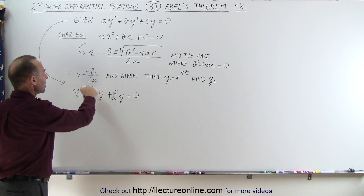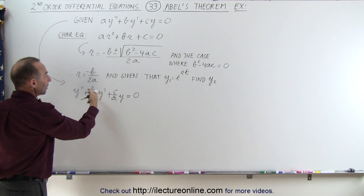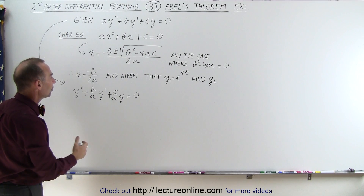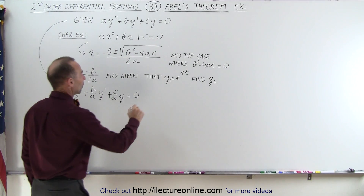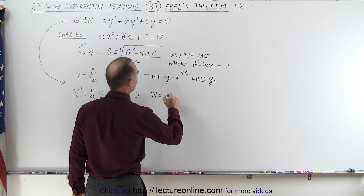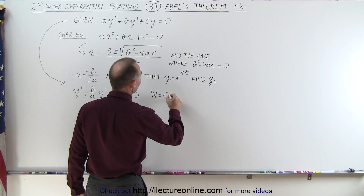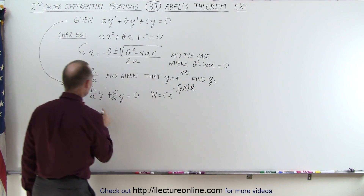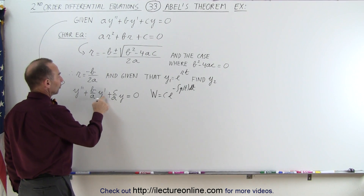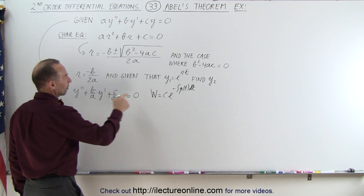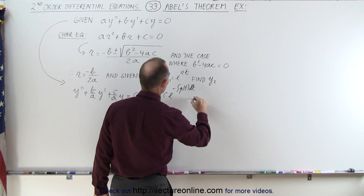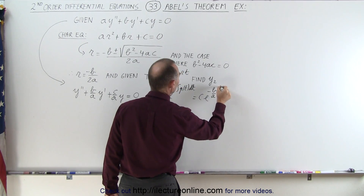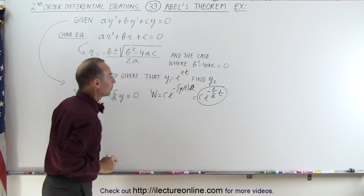This is the function in front of y prime. Even though it's a constant, we can think of it as p of t, which means the Wronskian can be written as some constant times e to the minus integral of p of t dt, where p of t is the coefficient of the y prime term. So this becomes minus b over a times dt, and when we integrate, this becomes c times e to the minus b over a times t. This is the Wronskian of this particular problem.